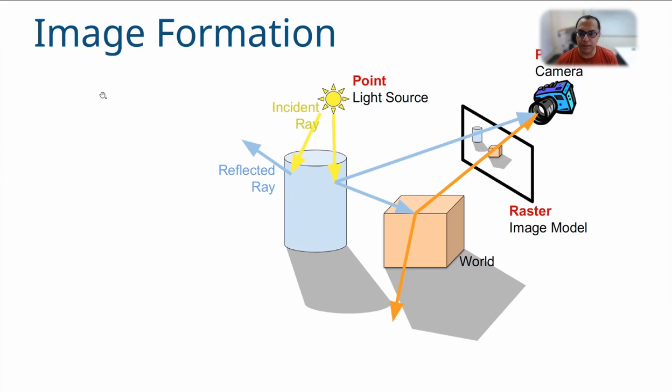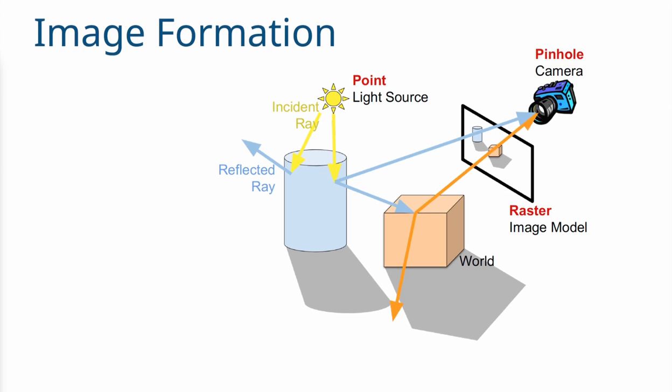If you remember, we started our discussion of the image formation model in computer graphics by looking at an abstract model like this. We said that we have a virtual world with 3D objects where we know the surface material properties, point light sources, a raster image model, and a pinhole camera. We started with the raster image model. Today we are going to start looking at another component: the pinhole camera.